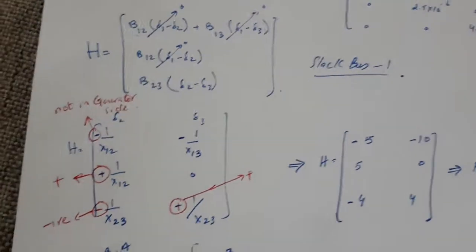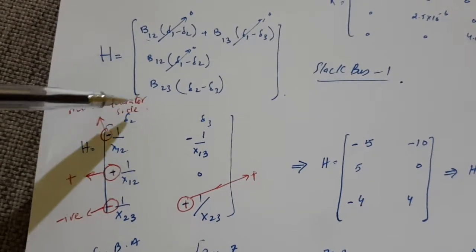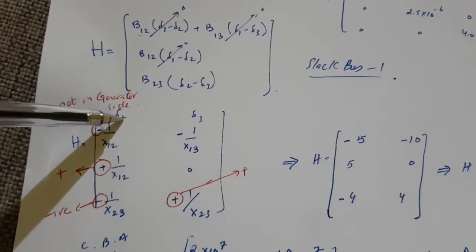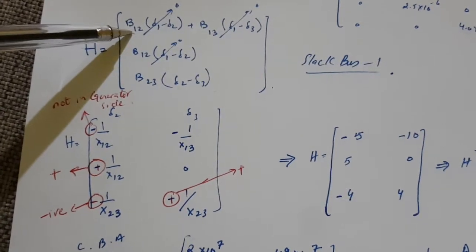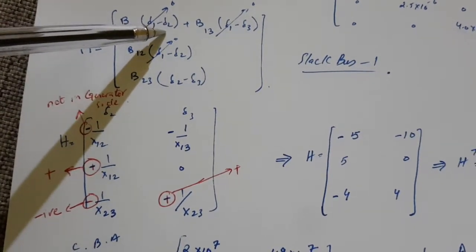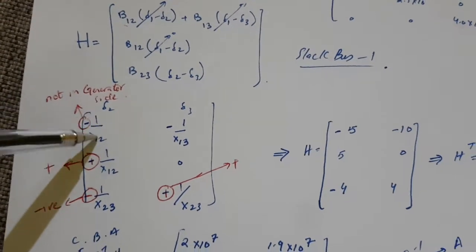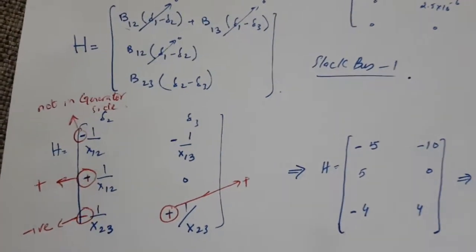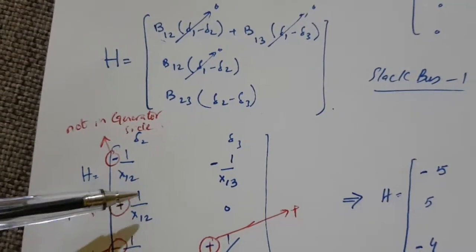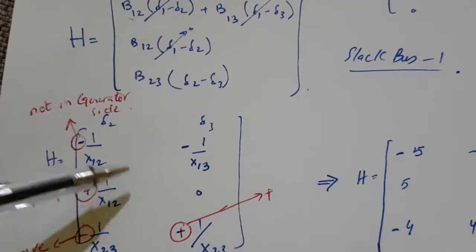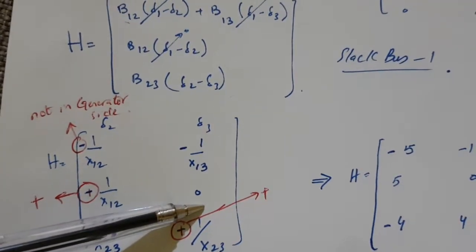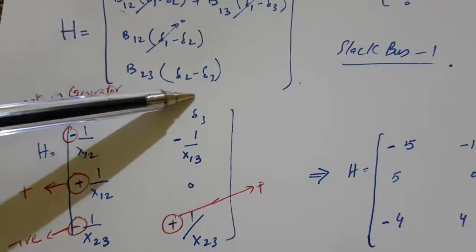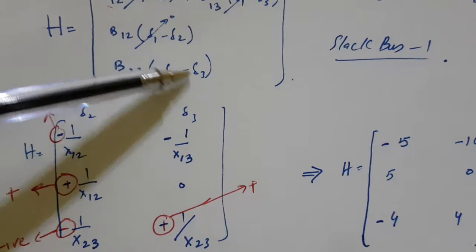With bus 1 as slack, all variables related to del1 are zero. The next part is to put the values — you stack del2 and del3. For del2: (1/x12)*del2 and (-1/x12) for the corresponding column. For del3: (-1/x13). Similarly for T12: (1/x12) for del2, 0 for del3. For T23: B23 = (1/x23) for del2 and (-1/x23) for del3.